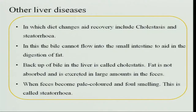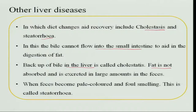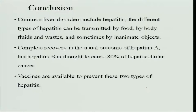Other liver diseases include cholestasis and steatorrhea. In cholestasis, bile cannot flow into the small intestine to aid fat digestion, resulting in a backup of bile in the liver. The liver fills with bile and it cannot flow to the gallbladder. Without sufficient bile, fat is not digested or absorbed, so large amounts of fat are excreted in the feces. When the feces becomes pale colored and foul smelling, that indicates excess fat — this is called steatorrhea.